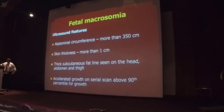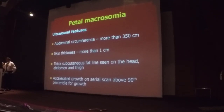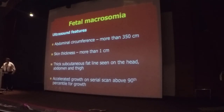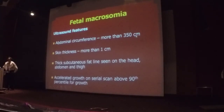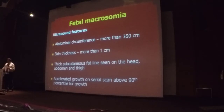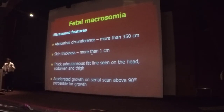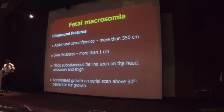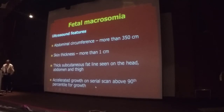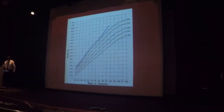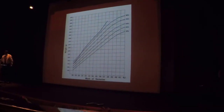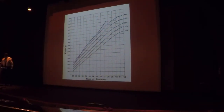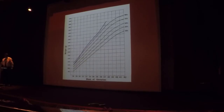When it comes to ultrasound features, always remember the abdominal circumference — it is very important for assessing fetal growth. For fetal macrosomia, the abdominal circumference is usually more than 350 mm; this is a rough cutoff. For example, if a patient is seen at about 34 weeks and the fetal abdominal circumference is 350 mm, it is already significant. The fetal growth above the 90th centile should trigger you to think that you are dealing with a macrosomic fetus.